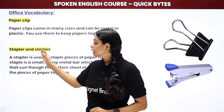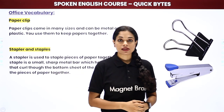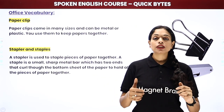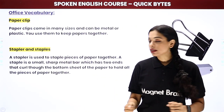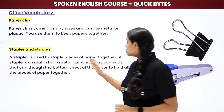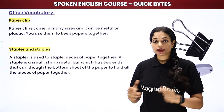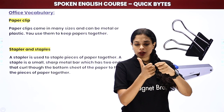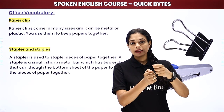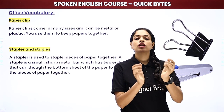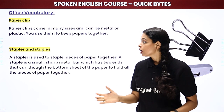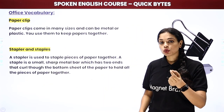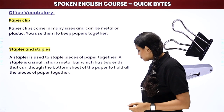Then we have a stapler and staples. A stapler is what you use to staple pieces of paper together. You've probably punched many papers together using a stapler so that they don't separate. And staples are the small metal pins inside the stapler — those are called staple pins.